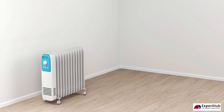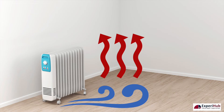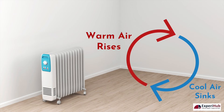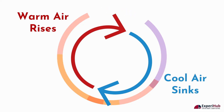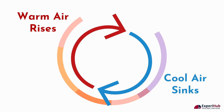Heaters are placed near the floor since cold air settles more at the bottom. A heater will heat up the cold air below, make it rise up and hence make the room warmer. The cool air that settles near the floor will get heated and rise. These convection currents help keep the room warm.